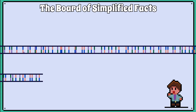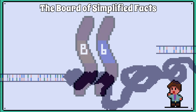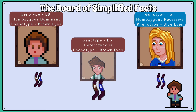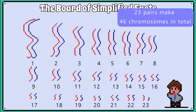A chromosome is made up of one long strand of DNA, and they come in pairs. One chromosome is inherited from the biological father, and one from the biological mother. In humans, we have 23 pairs of chromosomes.